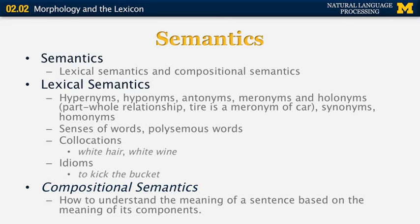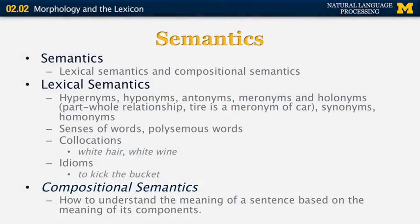Lexical semantics also deals with the senses of words — words with multiple senses are known as polysemous words. It also covers collocation: a sequence of words that appear together more frequently than expected from their individual probabilities. For example, 'stock market' appears more frequently than the product of the individual probabilities of 'stock' and 'market.' We also have idioms — specific collocations with meanings not literally inferable from components, such as 'to kick the bucket,' which means to die. Compositional semantics deals with understanding the meaning of a sentence based on the meaning of its components.